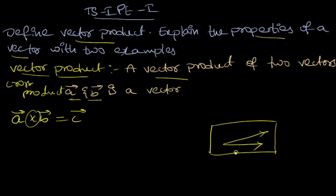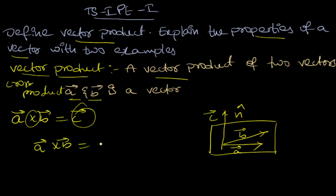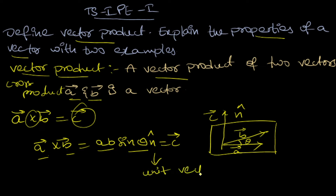For example, if we have a plane containing vectors A-bar and B-bar, the direction of the resultant vector C-bar is given by the unit vector n-cap. This vector C-bar will be perpendicular to the plane which contains A-bar and B-bar. The vector product A-bar cross B-bar can be written as AB sinθ n-cap, which is equal to C-bar.